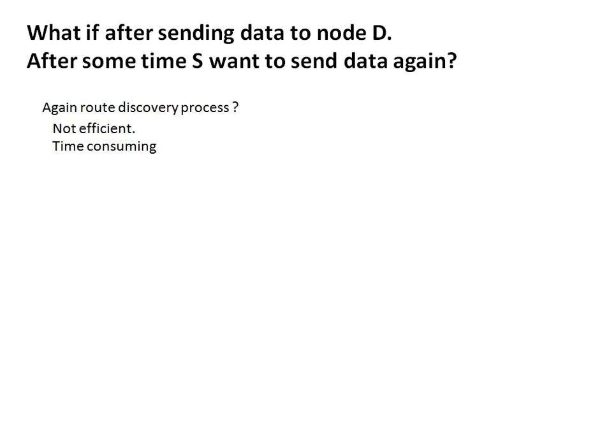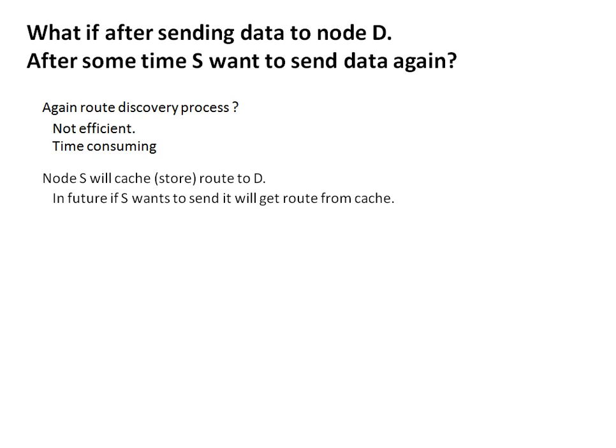Now a question arises: after S delivers its packet to D, if after a few seconds S wants to send more data to D, starting the route discovery process again each time would consume the same time and is not efficient. One solution is that node S stores the route for some time so it can be used in the future. This feature is known as route caching — the route is stored so that next time S wants to send data to D, the cached route can be used.